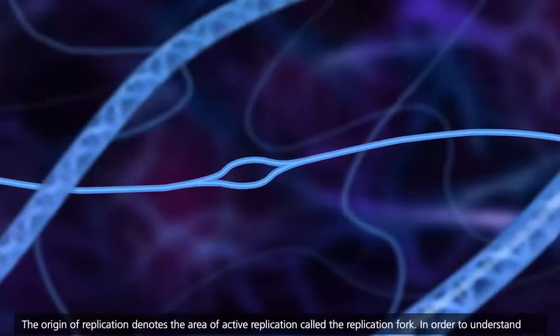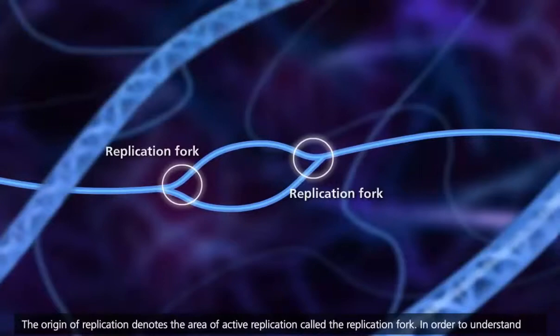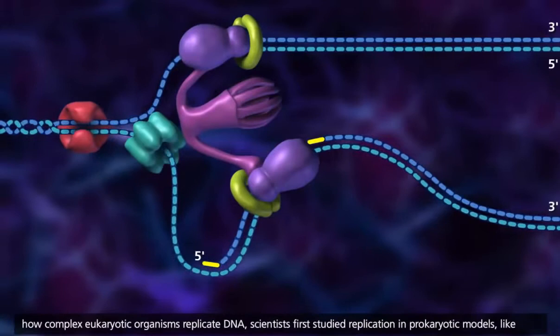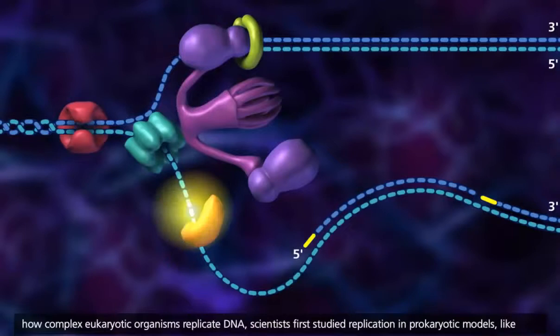In order to understand how complex eukaryotic organisms replicate DNA, scientists first studied replication in prokaryotic models like E. coli. A number of enzymes are needed for replication to proceed once the replication fork is established.